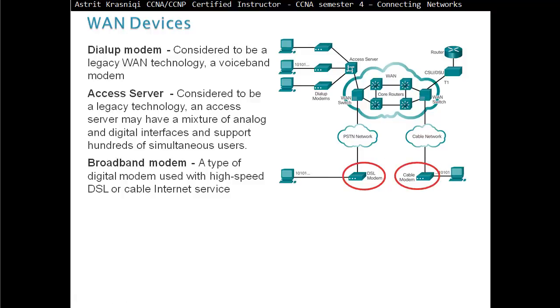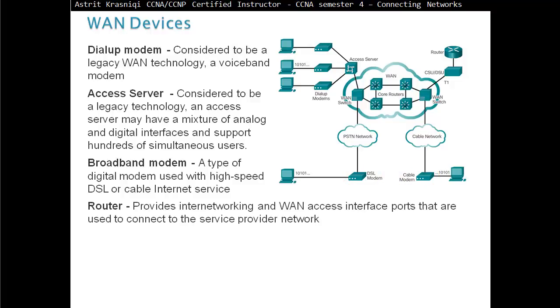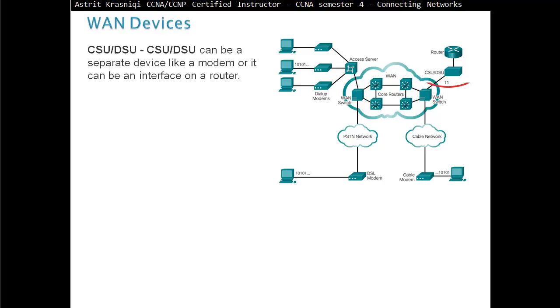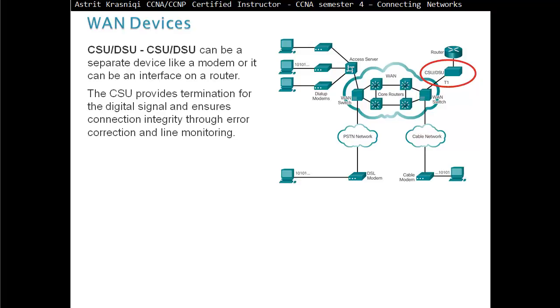Broadband modem, a type of digital modem used for high speed DSL, digital subscriber line, or cable internet services. Routers provide inter-networking and wide-area network access interface ports that are used to connect to the service provider network. Core routers, a router or multi-layer switch that resides within the middle of the backbone of the wide-area network. We have a CSU-DSU device. It can be a separate device like a modem or it can be an interface on a router. The CSU provides termination for digital signal and ensures connection integrity through error correction and line monitoring. The DSU converts the line frames into frames that the LAN can interpret and vice versa.